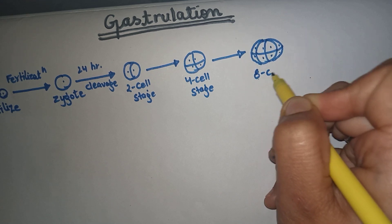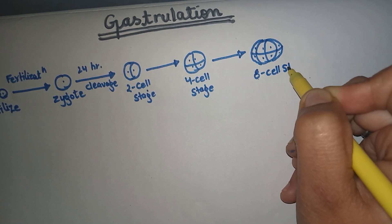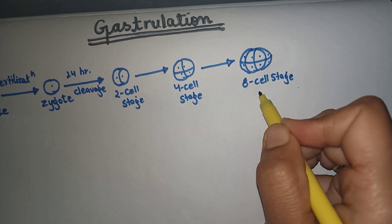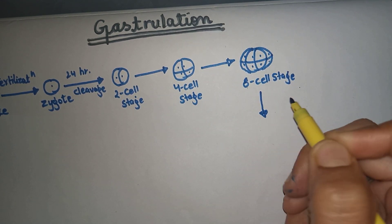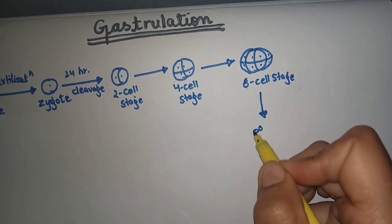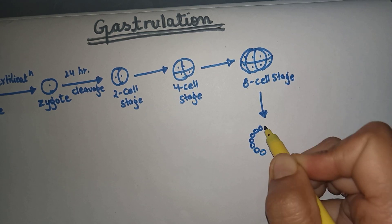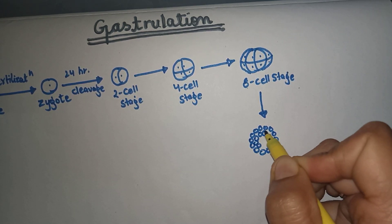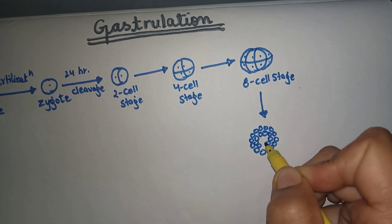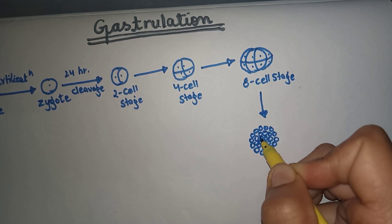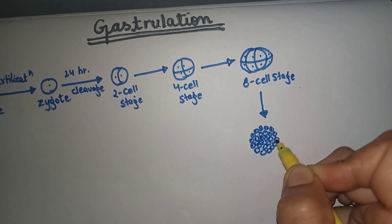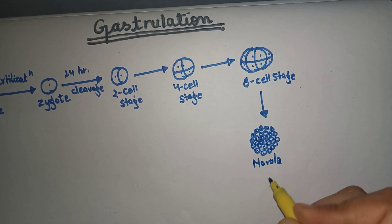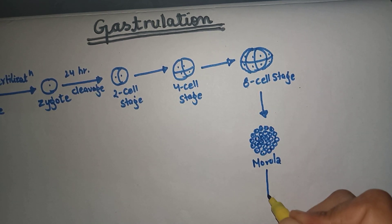After the 8-cell stage, the formation of morula occurs. Morula is a cluster of about 100 cells. After that, morula is proceeded by blastula.